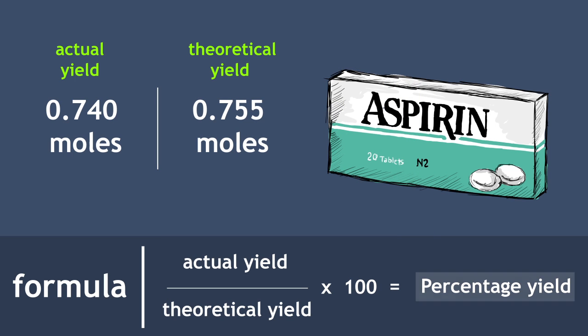Percentage yield equals actual yield divided by theoretical, multiplied by 100. In this reaction, we have an actual yield of 0.74 divided by a theoretical 0.755 moles.